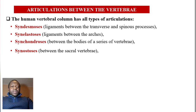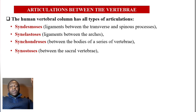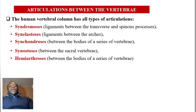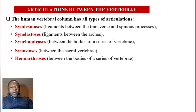Synostrosis — those are between the sacral vertebrae. In young people the sacral vertebrae are separate, but as time goes on they fuse into a single bone, the sacrum. Hemiarthrosis — those are between the bodies of a series of vertebrae.